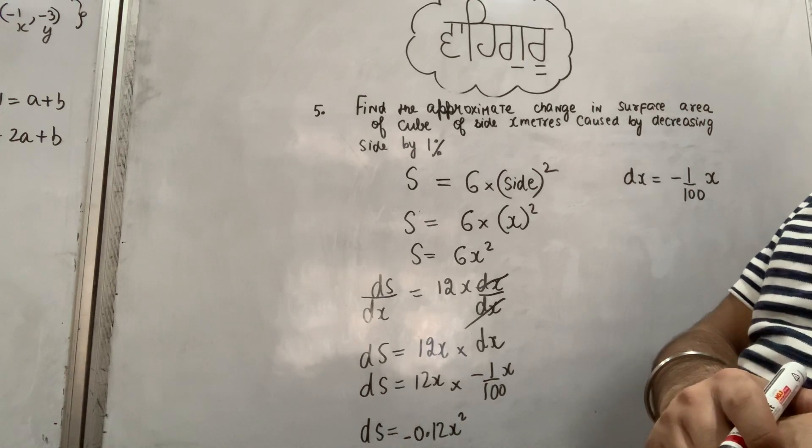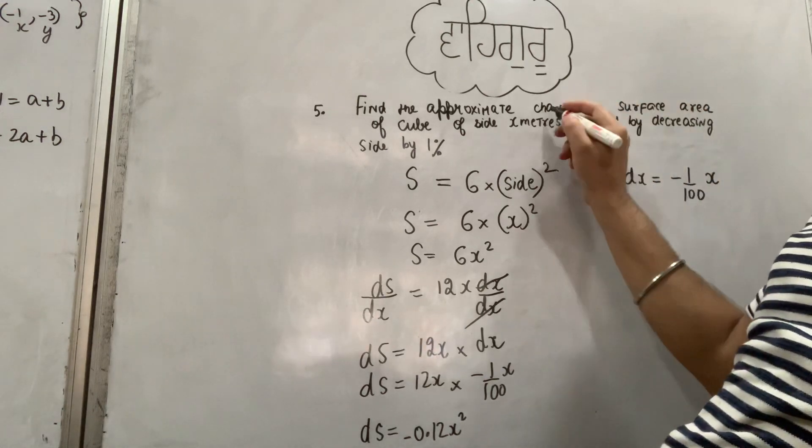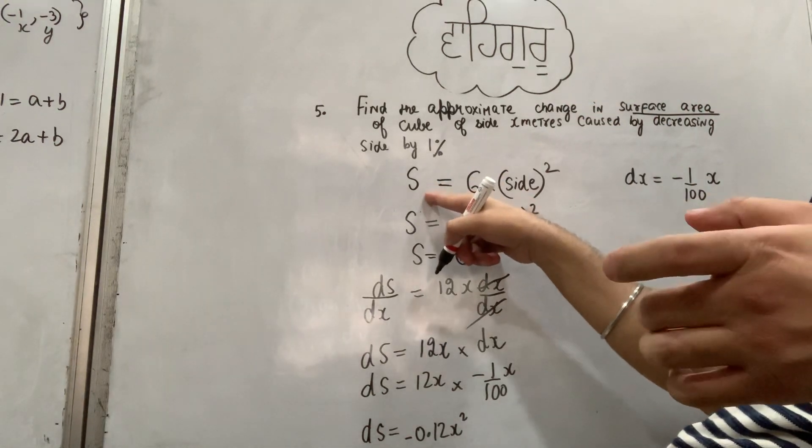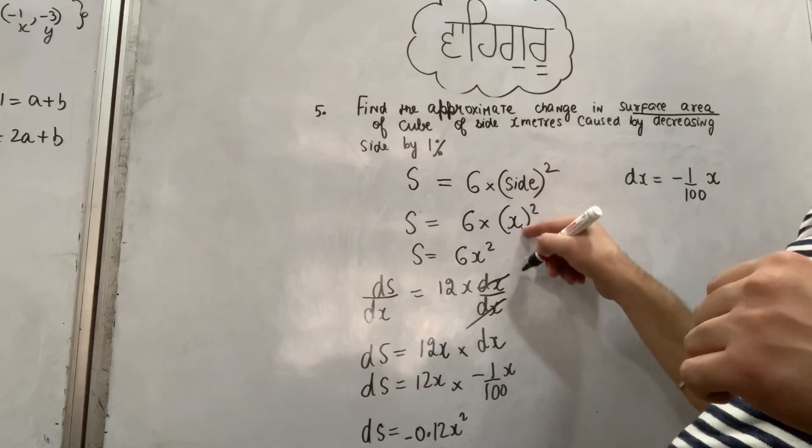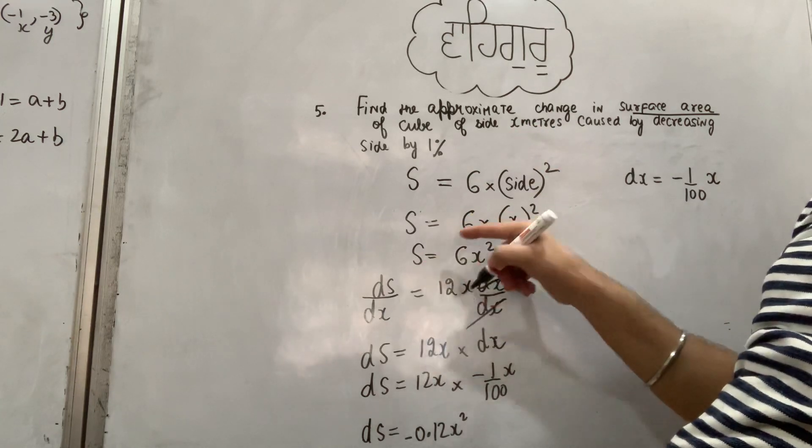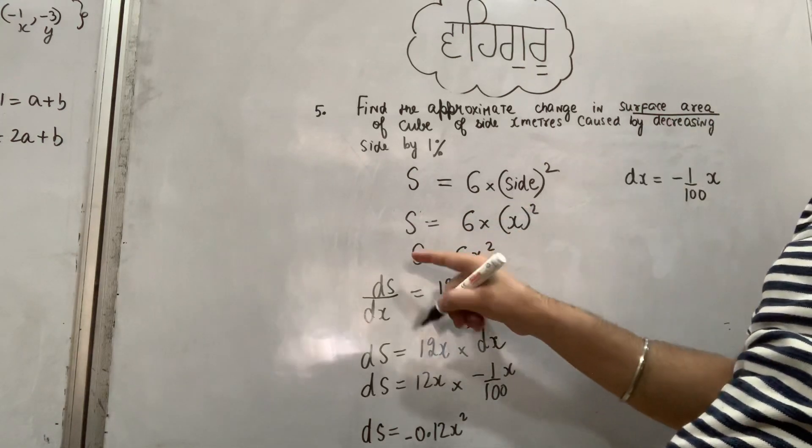What does change in surface area of cube mean? The surface area formula for a cube is 6 into side square. So S = 6x². Now, what is this derivative?